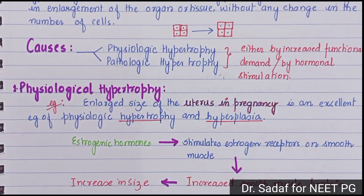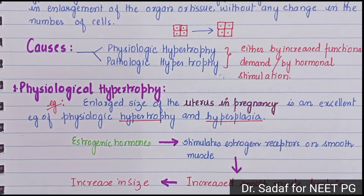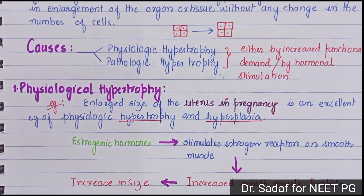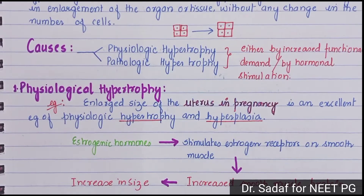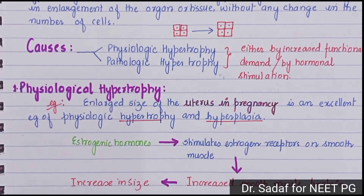The best example of physiological hypertrophy is the uterus in pregnancy. The uterus starts as a small size and enlarges as pregnancy progresses. This is an excellent example of hypertrophy and hyperplasia. Estrogen hormone stimulates estrogen receptors present in the smooth muscle of the uterus, causing it to enlarge.